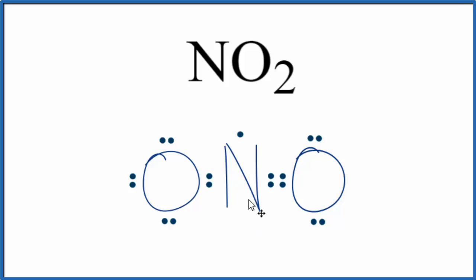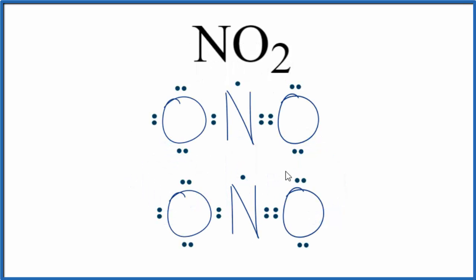There's another way we could draw this Lewis structure. We can move the double bond to the other side. We put these two electrons here and move these two out here. Now our double bond is on the opposite side—we have one here and then this one up here.